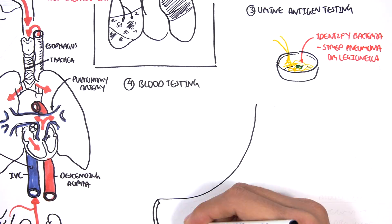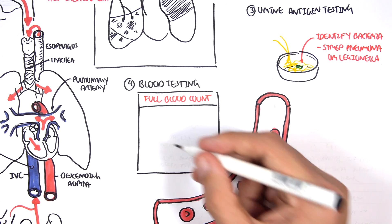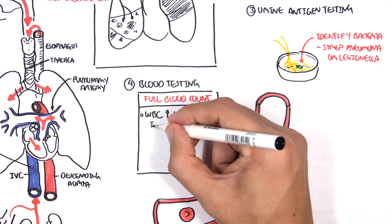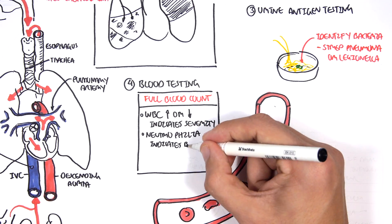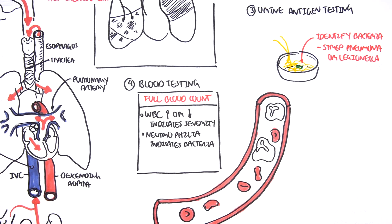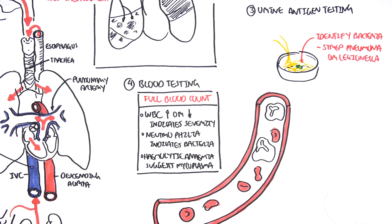Four. Blood testing. Full blood count, for example. White blood cells are up or down, which will indicate severity. Neutrophilia is indicative of bacterial infection. You can also have hemolytic anemia, which suggests mycoplasma as a causative agent.